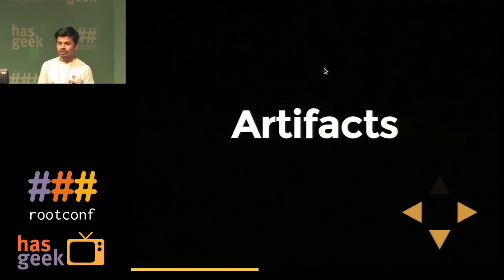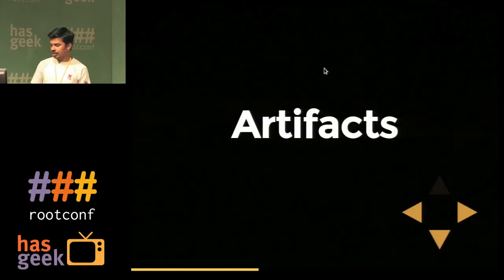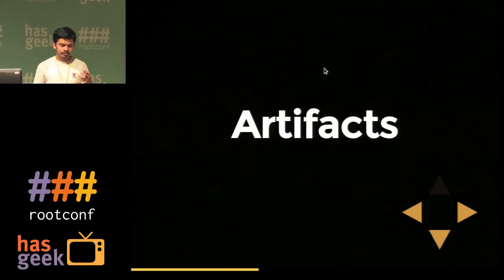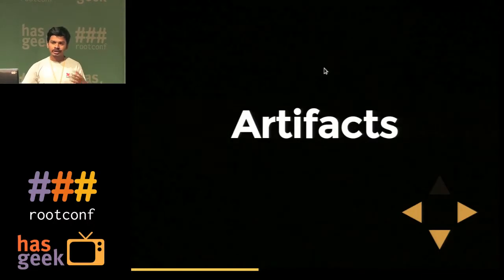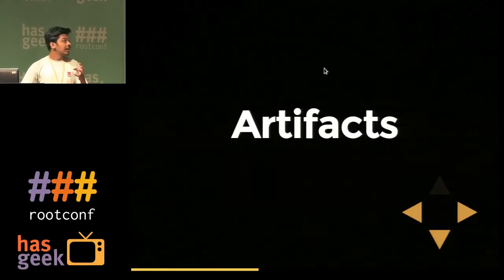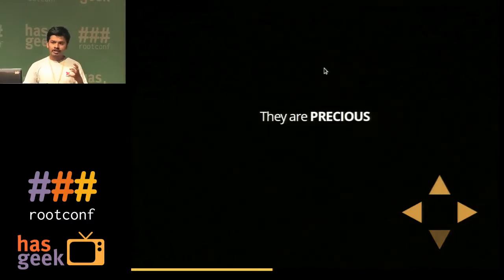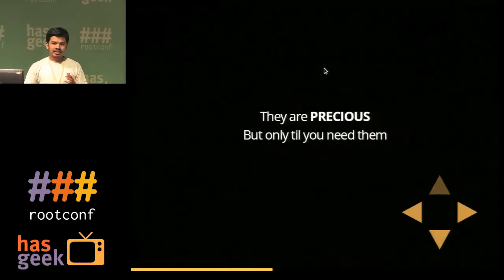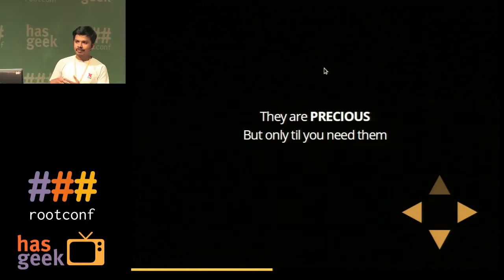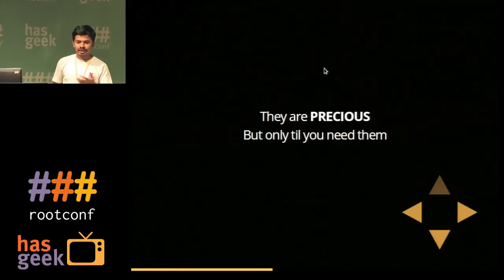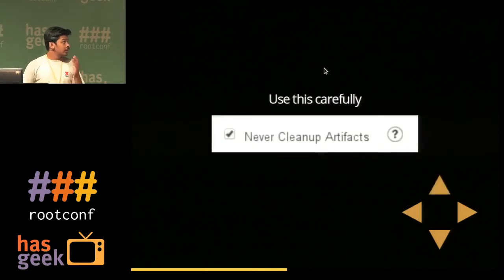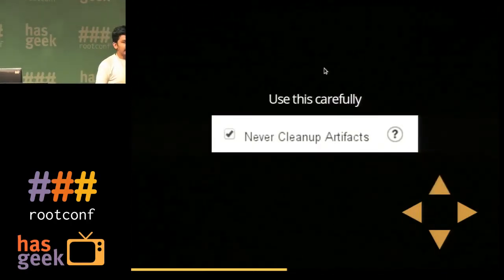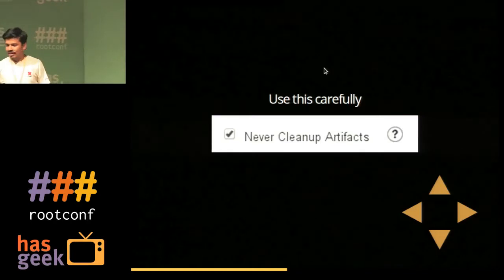Artifacts are the things your builds produce — when you run tests or compile your code, you might create a jar, an RPM, or whatever. Once tested, you need to keep them safe. They're precious, but only until you need them — once they've been deployed and rolled out of production for years, you don't need them anymore.